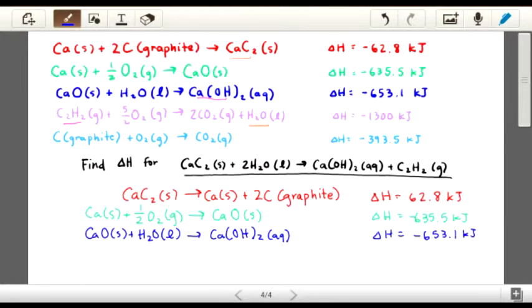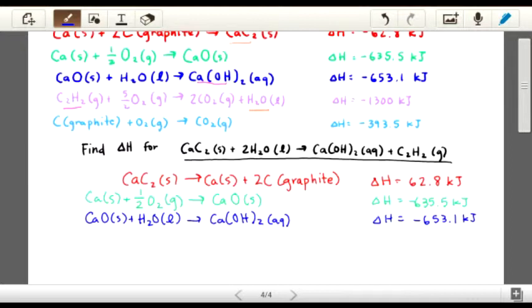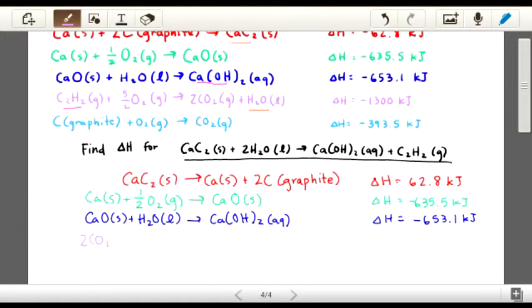Okay, and so our fourth equation, which is the purple equation, needs to be reversed because the H2O, as we saw, is actually supposed to be a reactant, and it's on the right, so we have to switch it so that it's on the left. So I will rewrite this switched. And there's also a fraction in front of this O2, but we're just going to leave it there for now. So this is going to be positive 1,300 kilojoules.